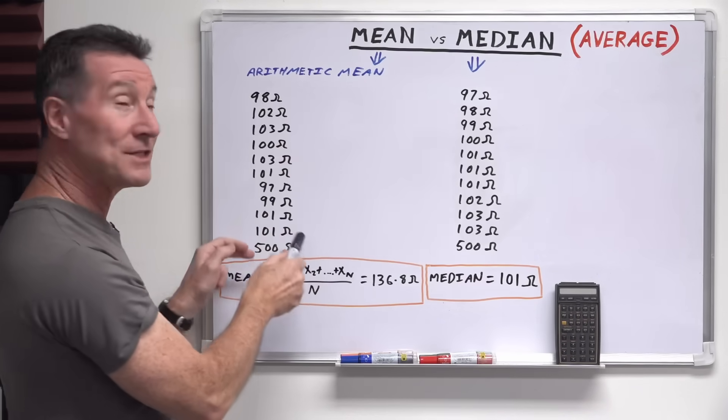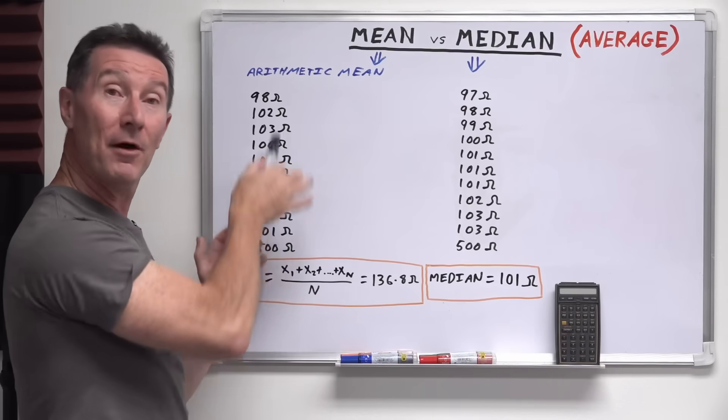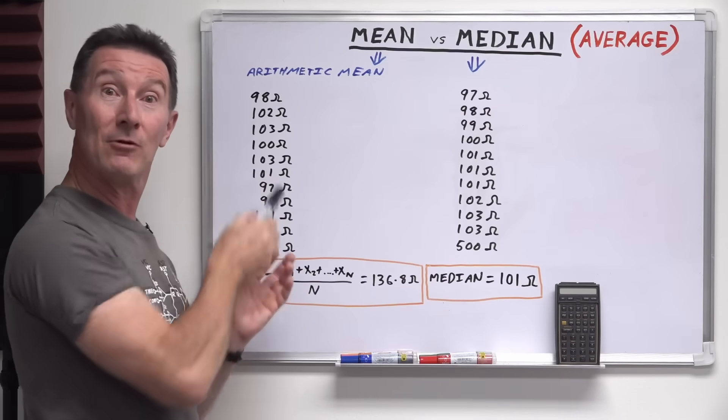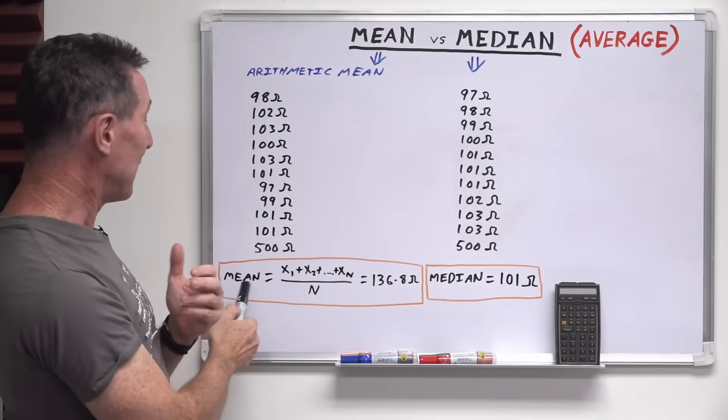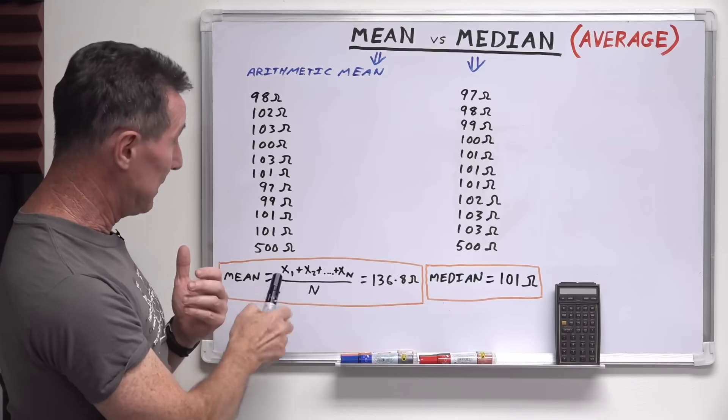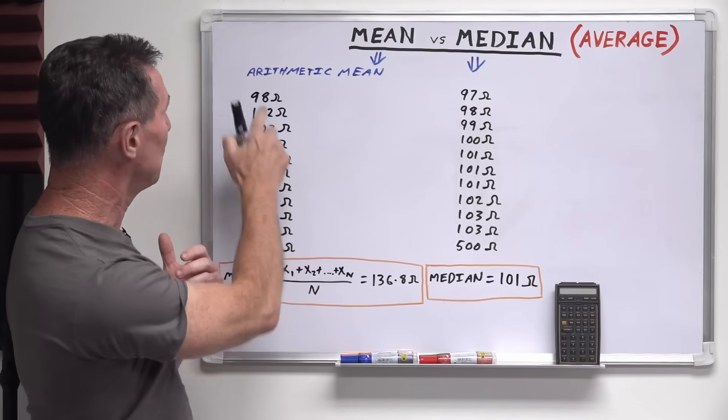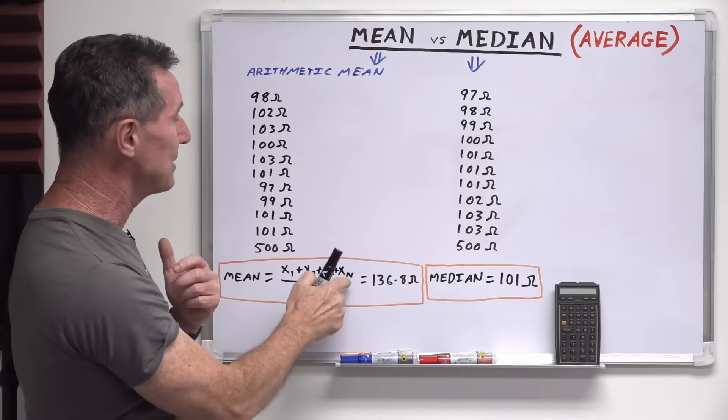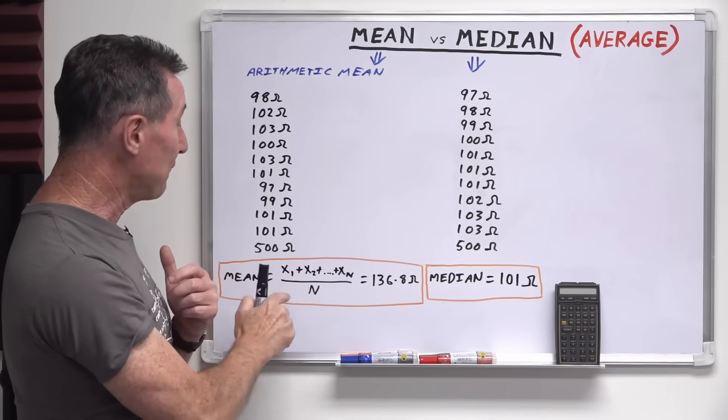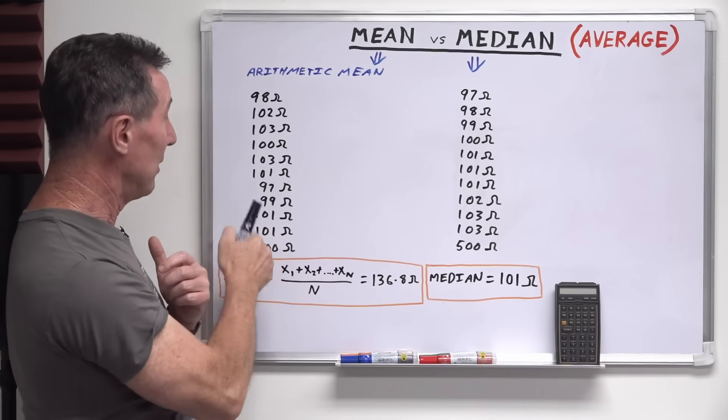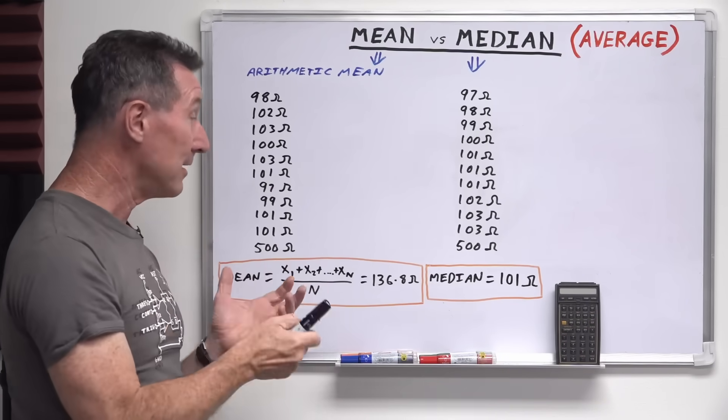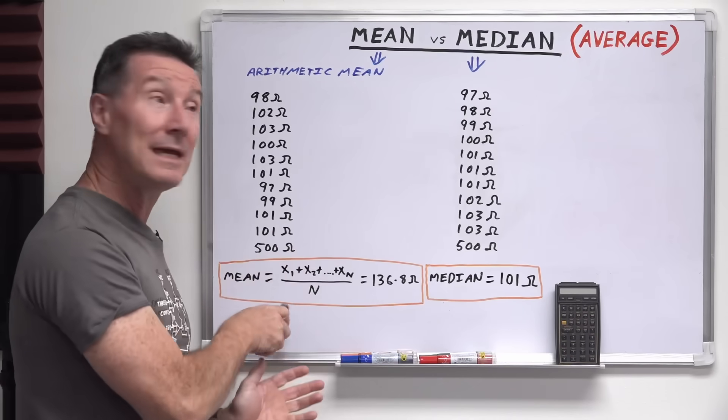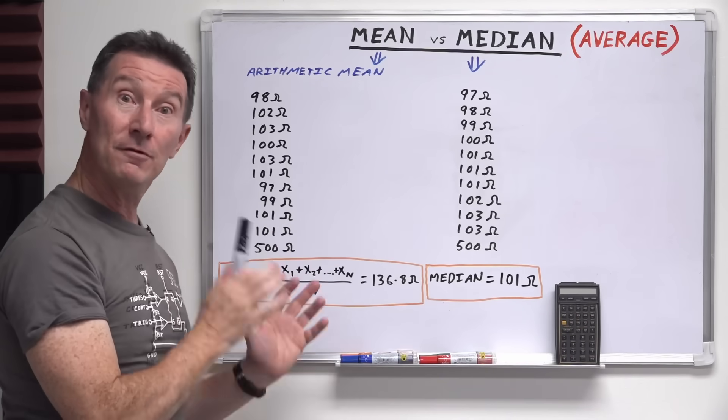Is simply all of those numbers added up and divided by the number of numbers that there are, the number of values. So that's written, the mean is in this particular case x1 plus x2, so x is the value, x2 plus plus plus to xn, the nth value divided by the number of values here, n. And that gives you your mean or average value.